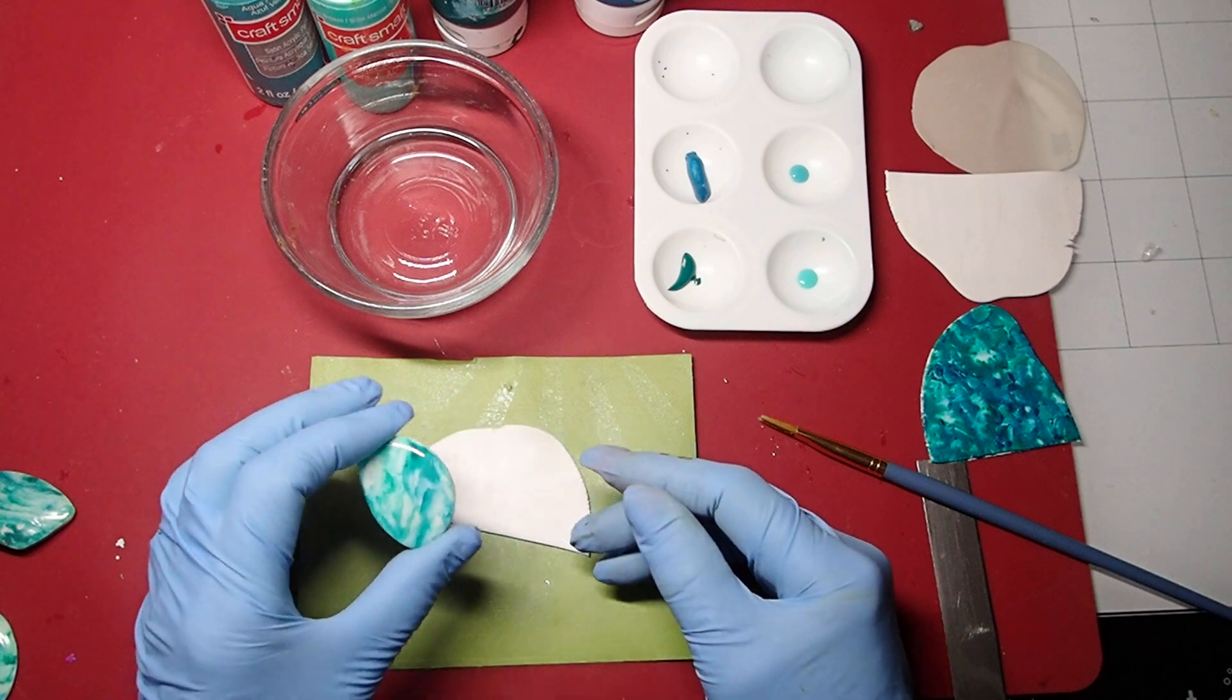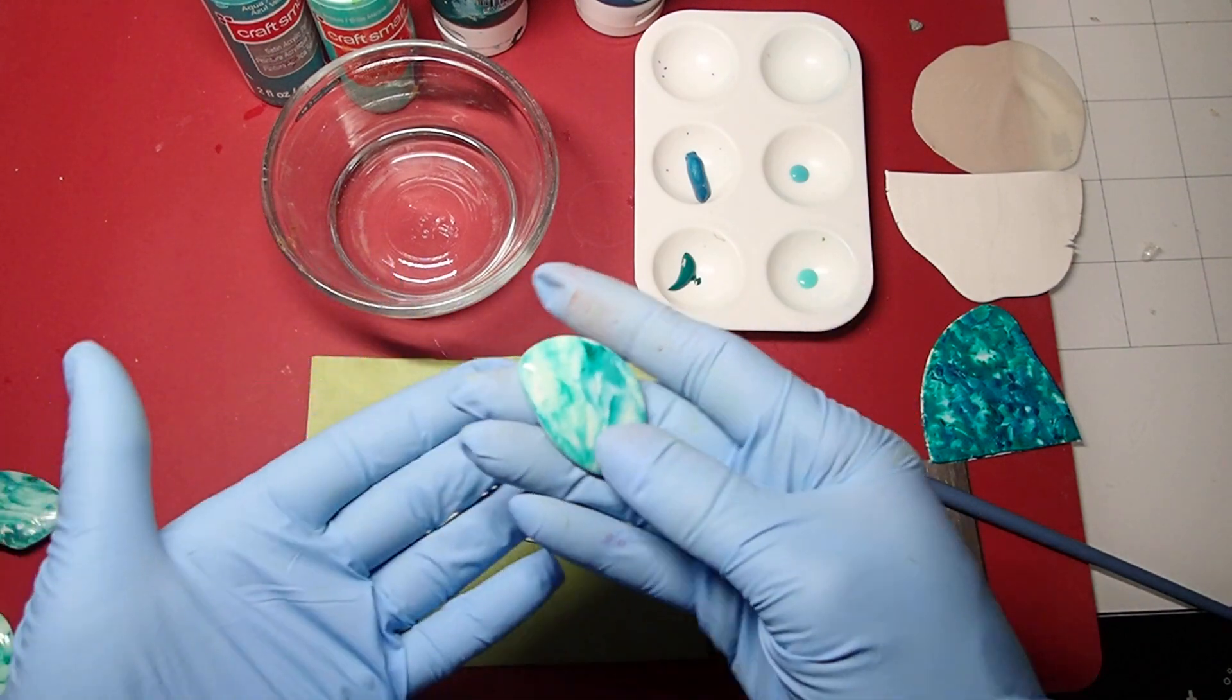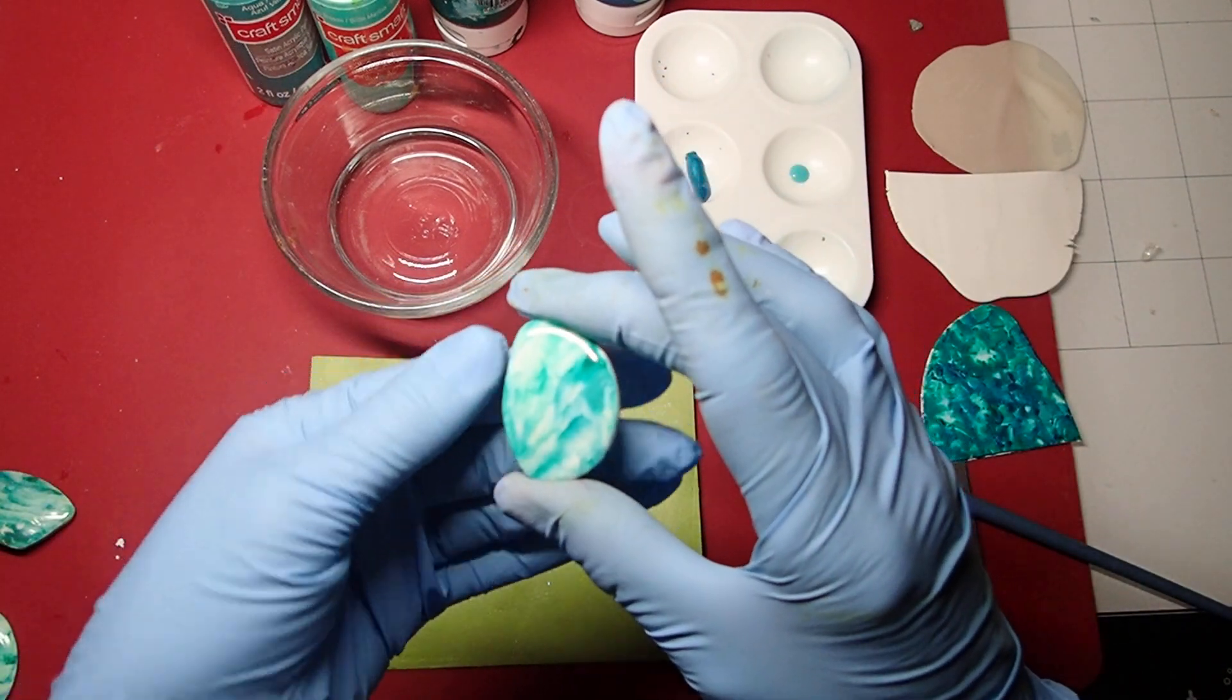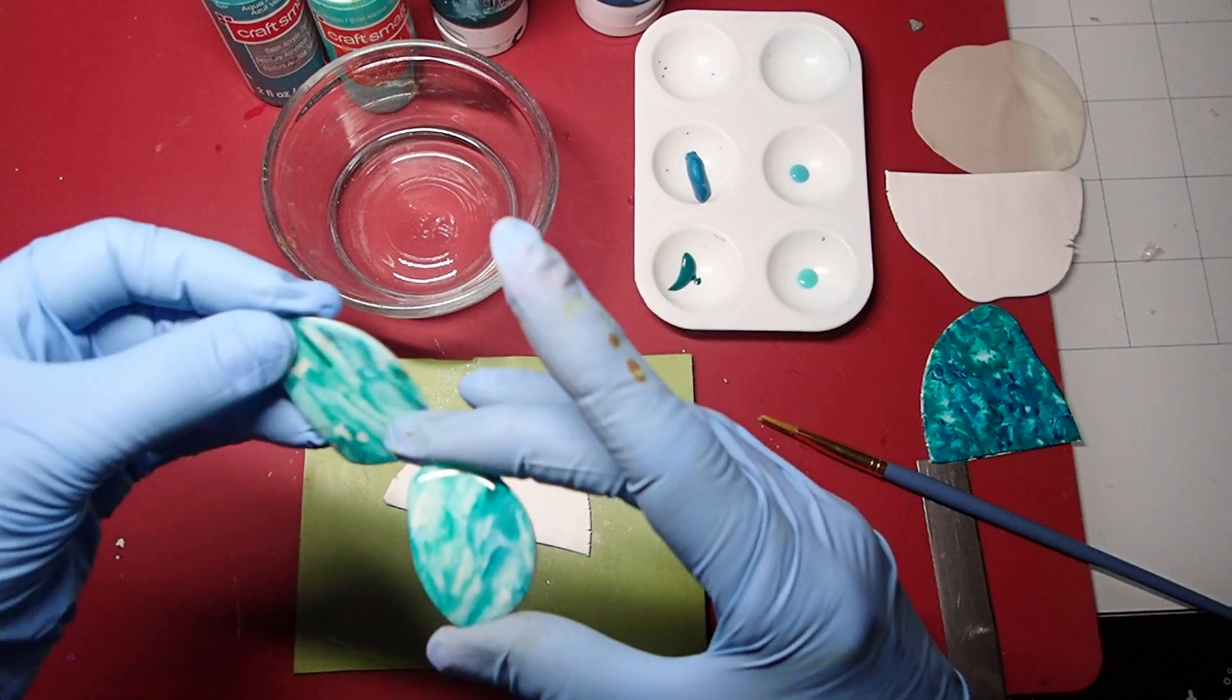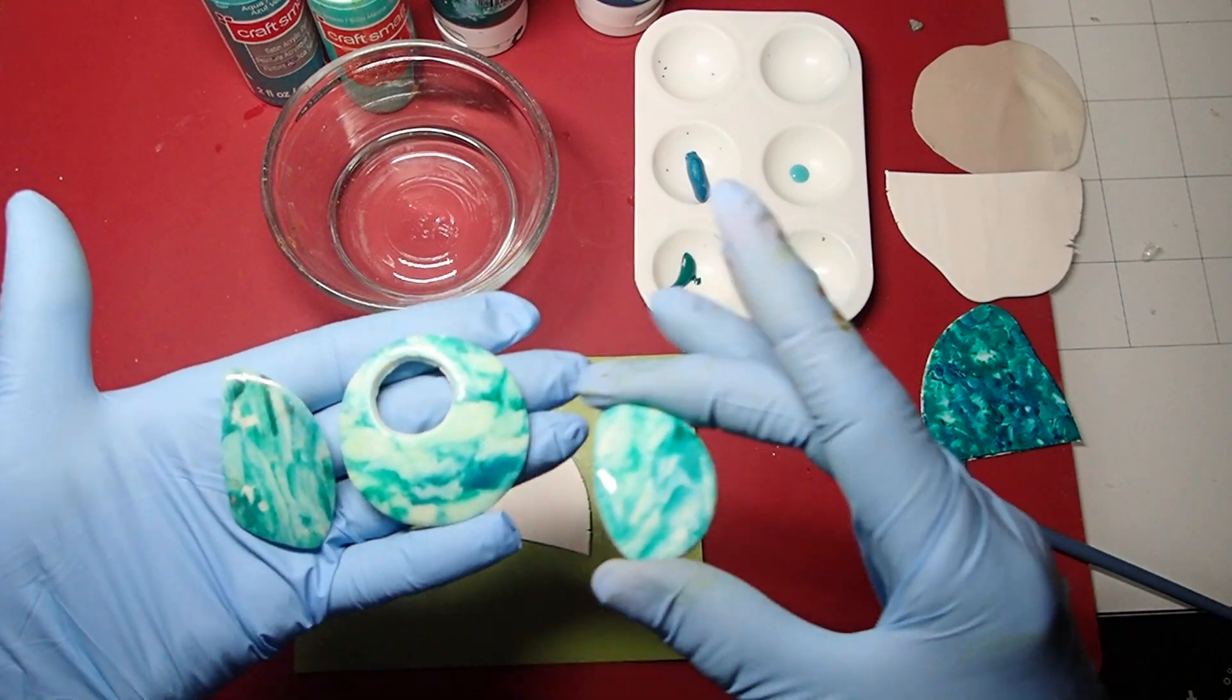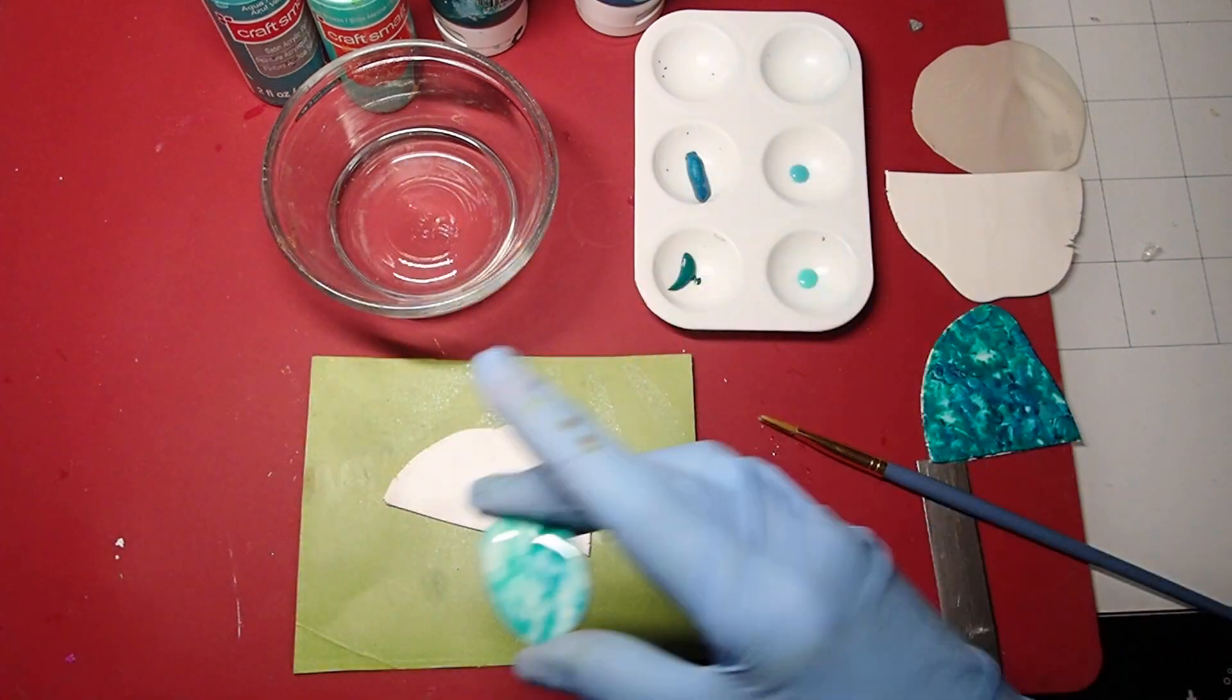Today I wanted to show you how to use acrylic paints on polymer clay. And this is one of the pendants that I just made the other day. I already put resin on it. It looks so pretty. I really love it. Here are a couple more that I was playing with. And this is all made with acrylic paint. I'm going to show you how to do it right now.